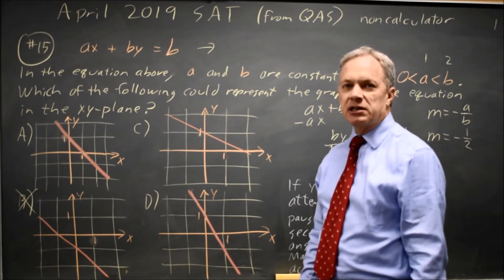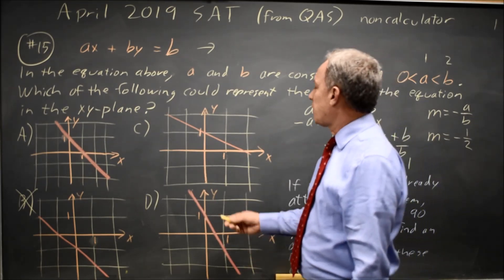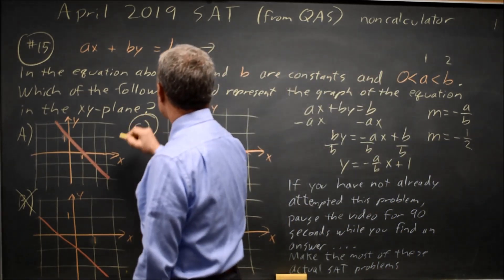But in any case, the correct graph will have a negative slope that's shallower than a slope of 1.